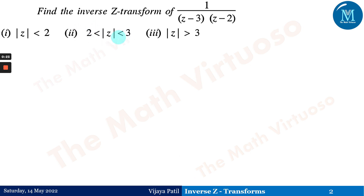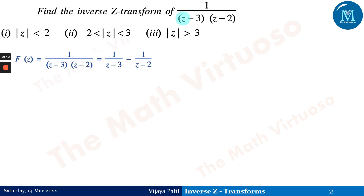I would like to explain this method using examples directly. Find the inverse Z transform of this particular function — cases 1, 2, and 3. These are the different ROC or region of convergence values given in this example.